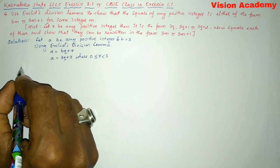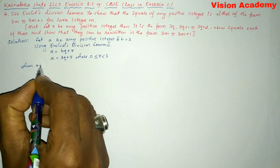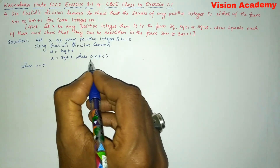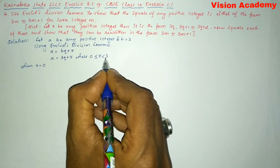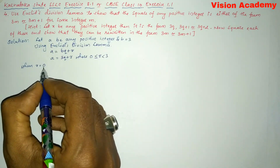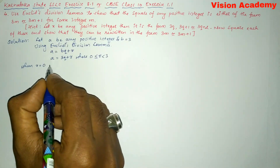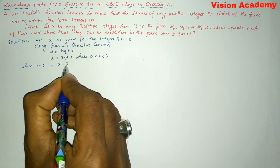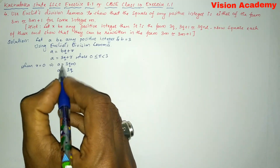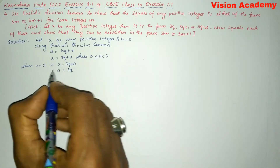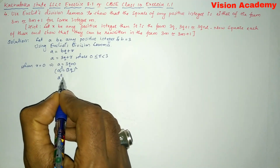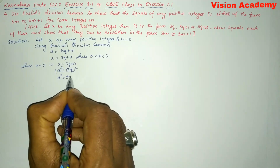Now, the remainder R can take values 0, 1, or 2, since R is less than 3. When R is equal to 0, we get A is equal to 3Q plus 0, so A is equal to 3Q. Now let us square both sides. This gives us A squared is equal to 9Q squared.